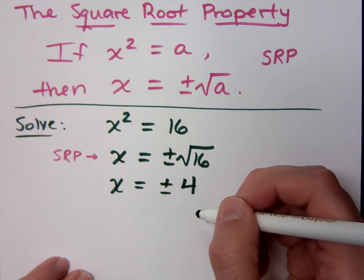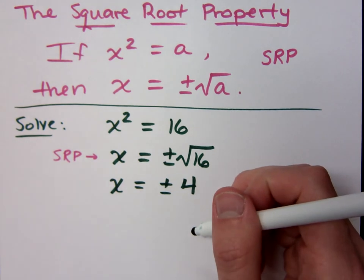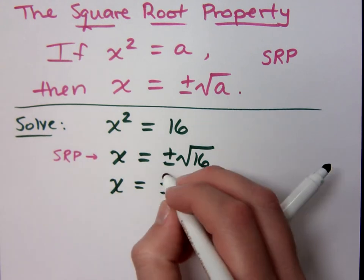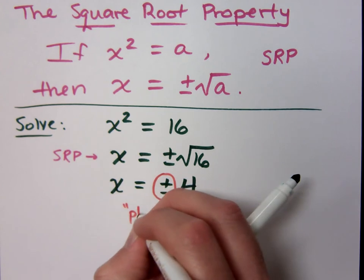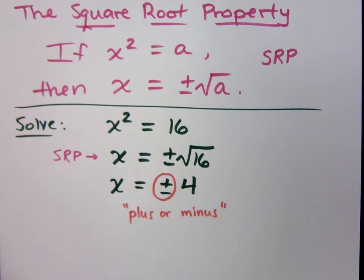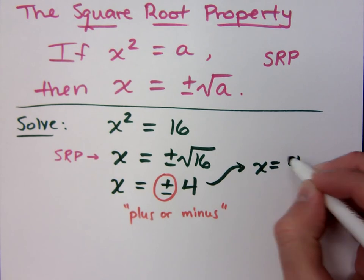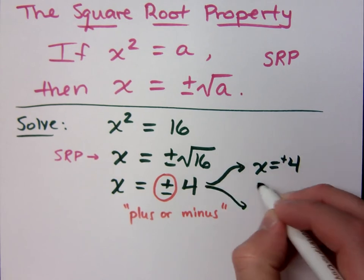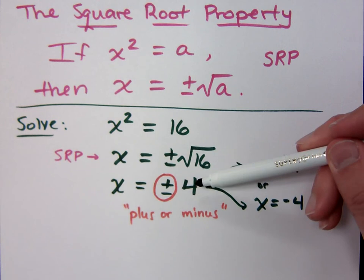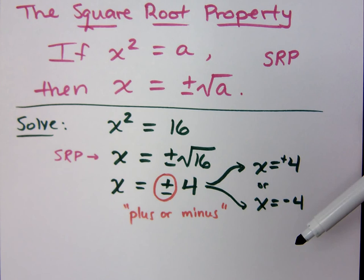Plus or minus 4, right? Please understand that when I use this symbol, we read this as plus or minus. What it does is condense our two solutions into one. Basically, x equals positive 4 or x equals negative 4. But instead of writing two different answers, I can write it as x equals plus or minus 4.